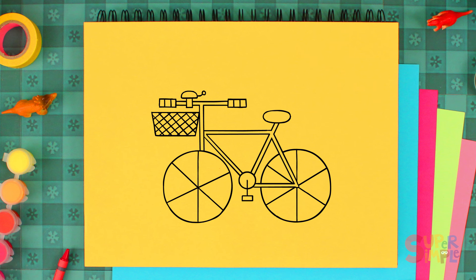Best of all, you can make your bike any colour that you want. You can make it green with blue stripes. Or pink with yellow polka dots.